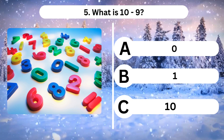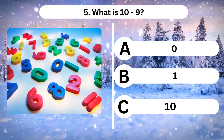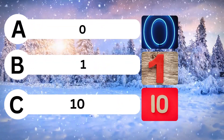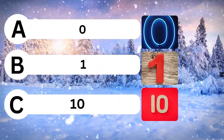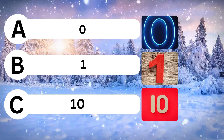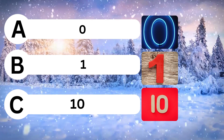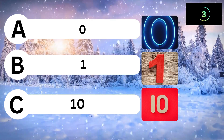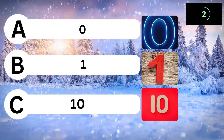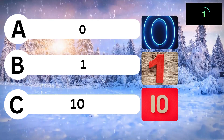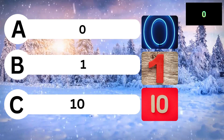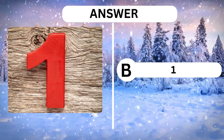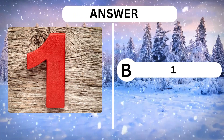Question 5. What is 10 minus 9? A. 0. B. 1. C. 10. Answer is B. 1.